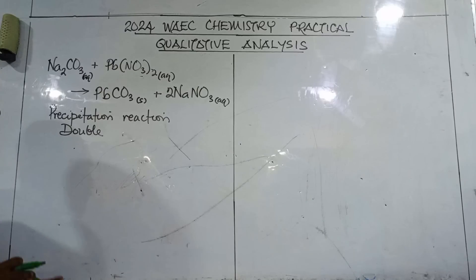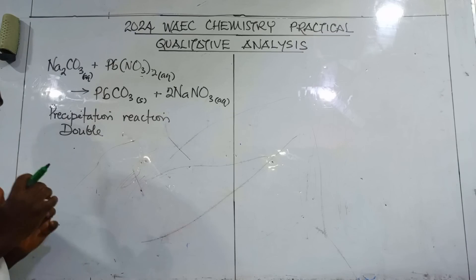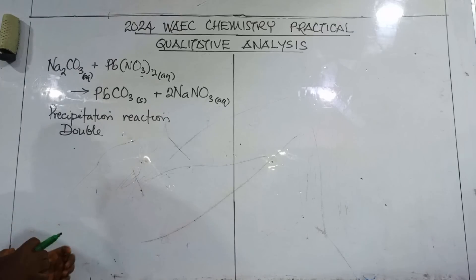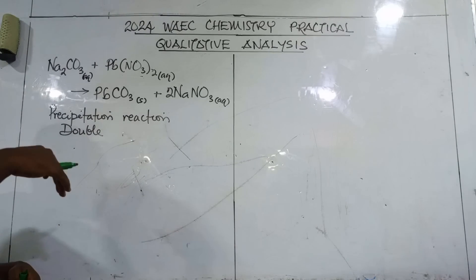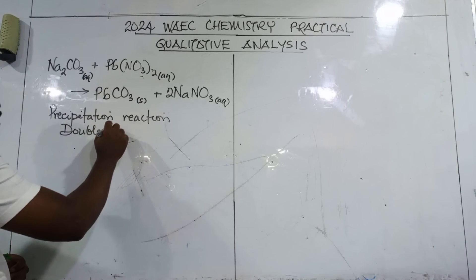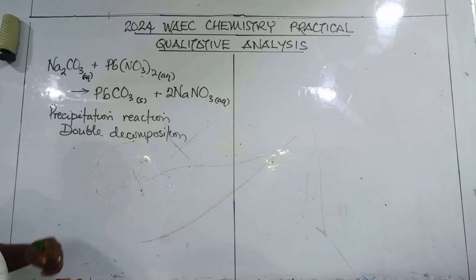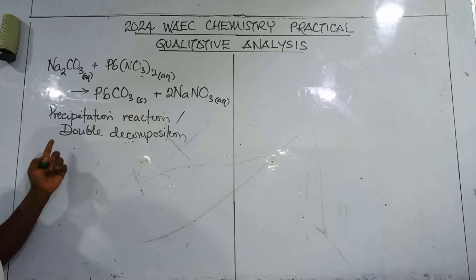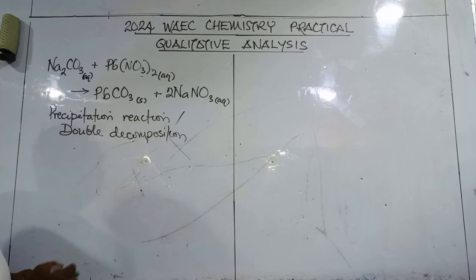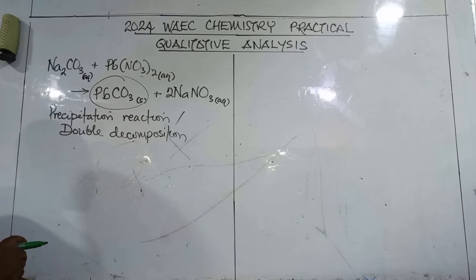You may also need this knowledge in your question 3. Double decomposition, or precipitation reaction, is always used to prepare insoluble salts. And the insoluble salt here is lead(II) trioxocarbonate(IV).